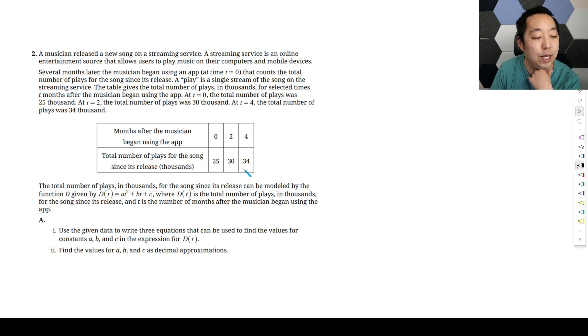Total number of plays in thousands for the song since its release can be modeled by the function at squared plus bt plus c, where D(t) is in thousands for the song since its release and t is the number of months after the musician began using the app. So a lot of explanation of just the context. They're playing a song and we're seeing the number of thousands of songs that are being played.